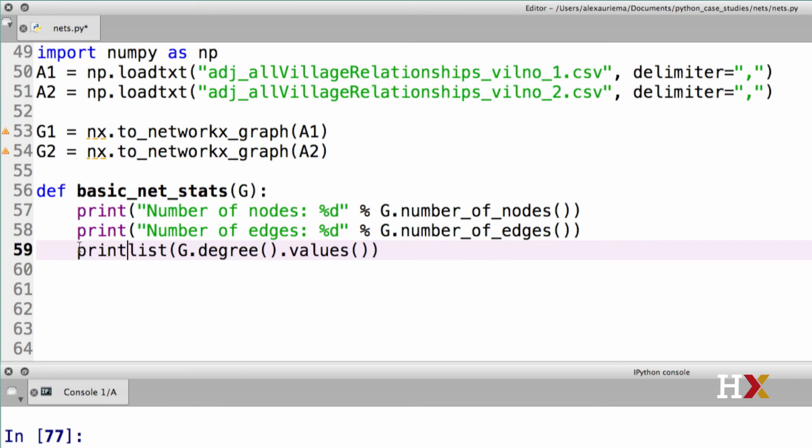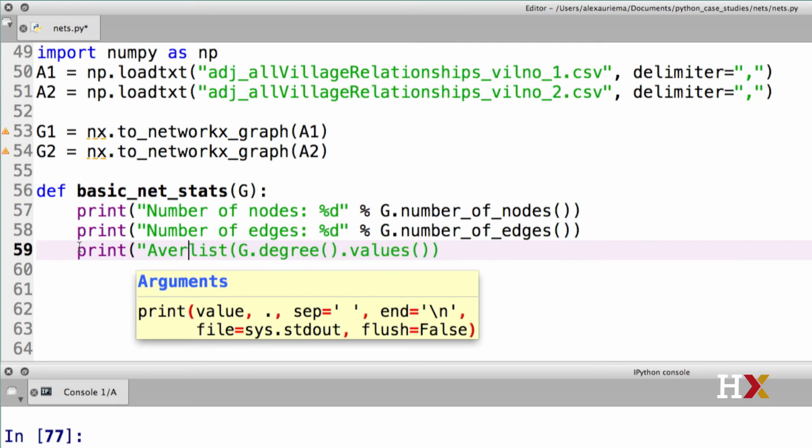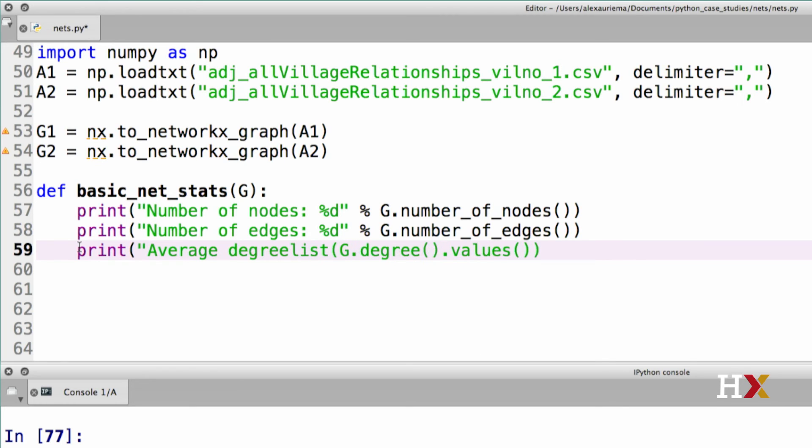And finally, the last line is our average or mean degree. And we can print that with two decimal places.